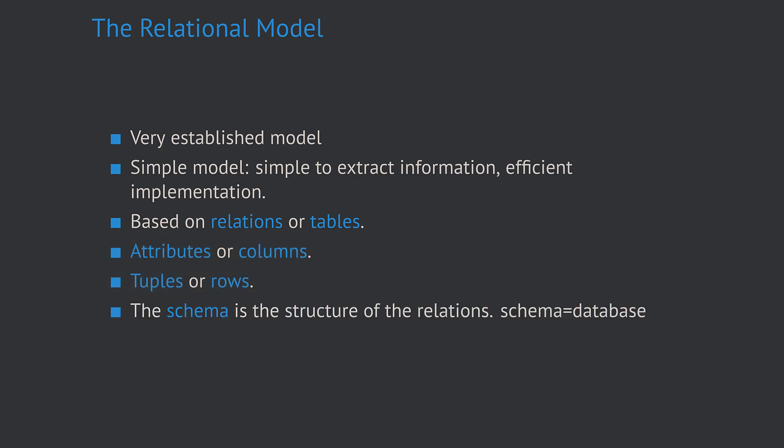A schema is the structure of the relations or the tables — it is just another word for the database itself. A database is nothing else than the collection of tables or relations. An instance denotes the contents of a relation at a given point in time. You can think of an instance as a snapshot of a database. Typically the contents of a database constantly change, so the instances at two different points in time will typically look different.